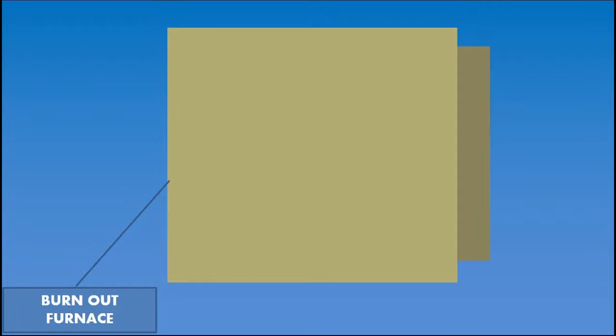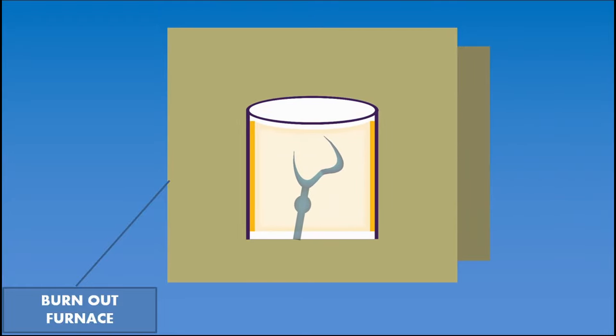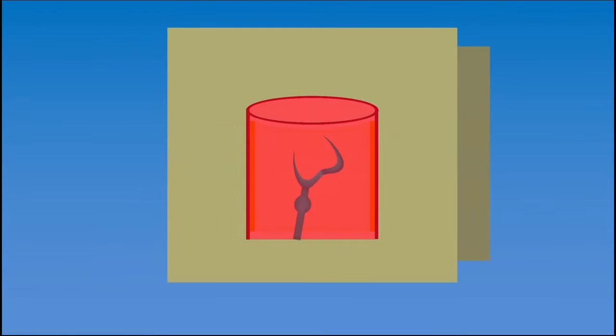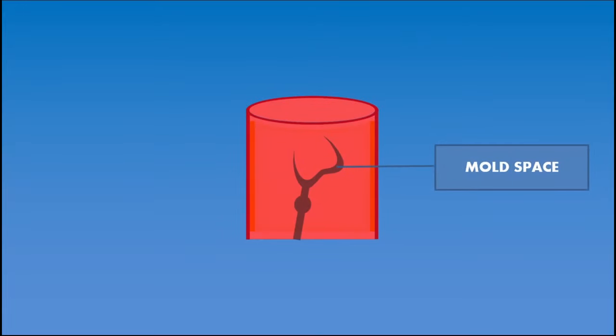Once the investment is completely set, the crucible former is removed. This complete setup is taken to a burnout furnace. The burnout furnace acts as a heat source and warms up the entire setup of casting ring and investment. Once a higher temperature is reached inside the burnout furnace, the wax pattern will get molten and the wax gets evaporated through the sprue space. This procedure of wax elimination is called wax burnout.